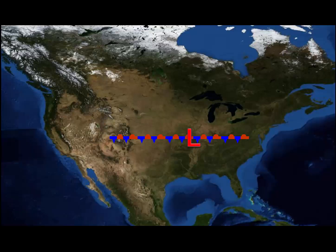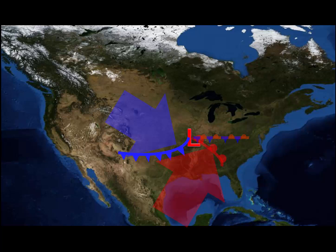Once we have the establishment of a surface low, replacement air will need to come in to replace where the air has risen. If replacement air comes from the north, that will come in on the left side of the low pressure area, forming a cold front. If replacement air comes from the south, that will be warm air, forming a warm front on the right-hand side of the low pressure area.